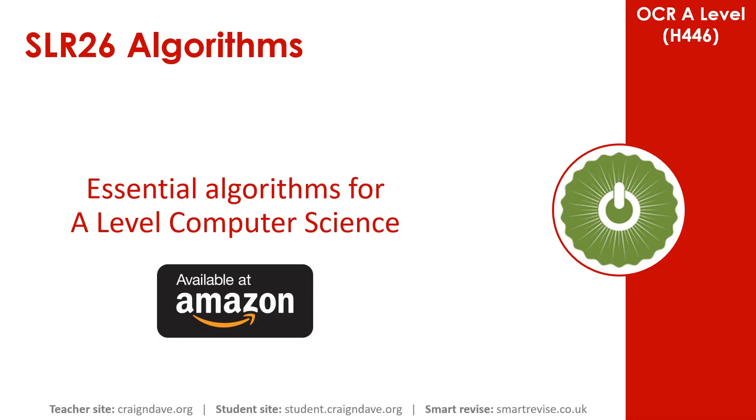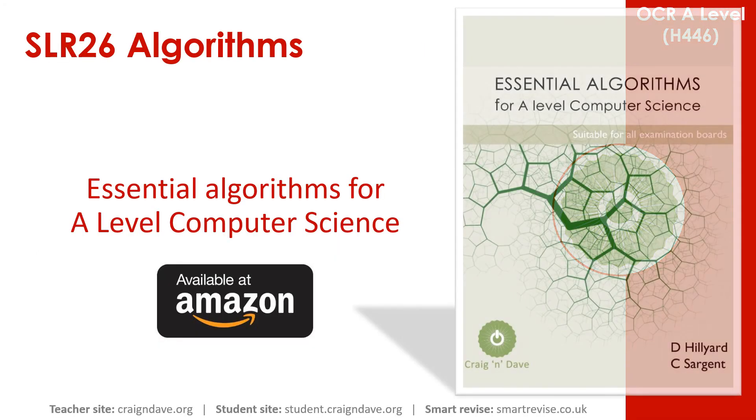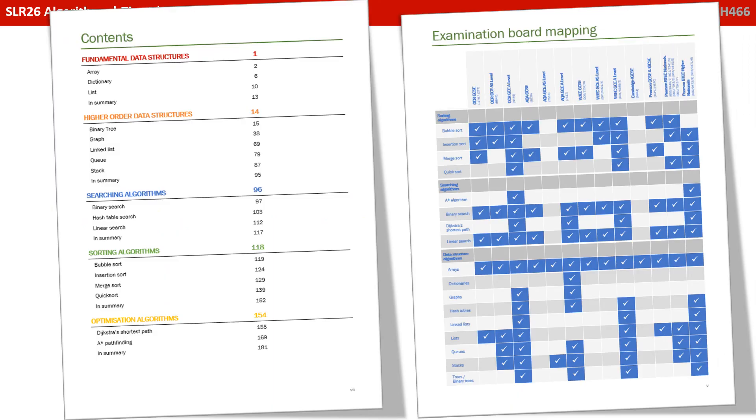We know that getting to grips with data structures and all the algorithms associated with them is a very tricky area of the course, and so we've produced a book called Essential Algorithms for A-level Computer Science that's available on Amazon. It covers all the data structures you need to know about along with the algorithms you need to perform on them, and it covers all the exam boards.